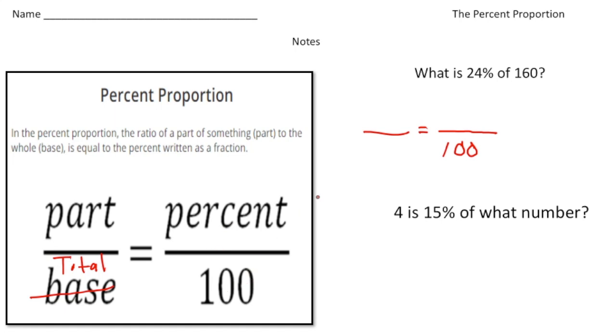So we know it's 24%, so I'm going to put the 24 where it belongs right there. Now the question is, what is 24% of 160? So the 160 is the entire thing, right? That's the total, so that's going to go where the total is, down here. So 160 is right here.